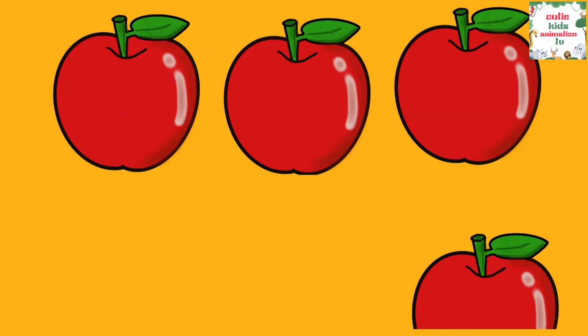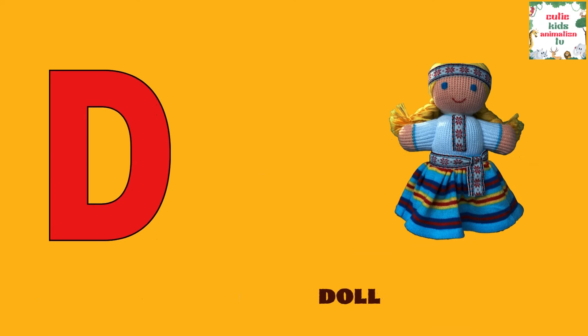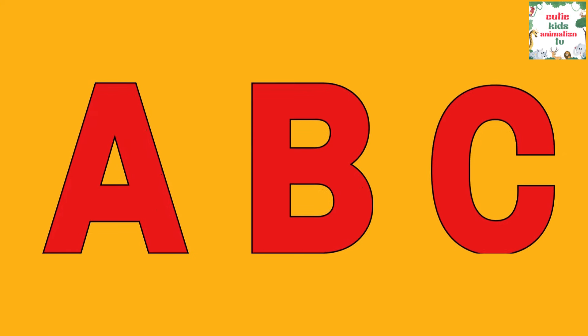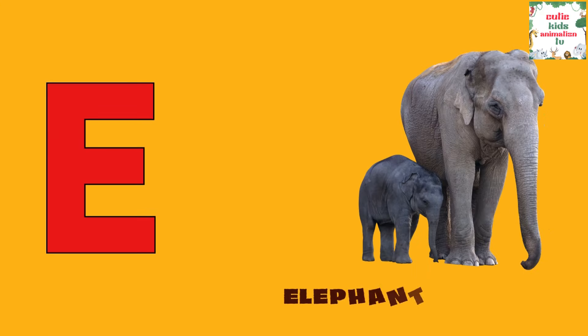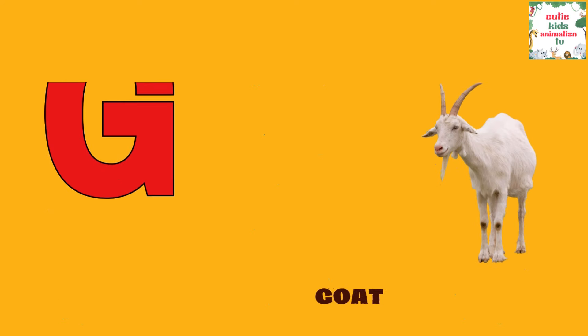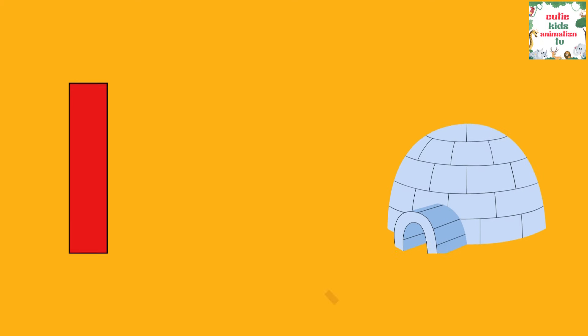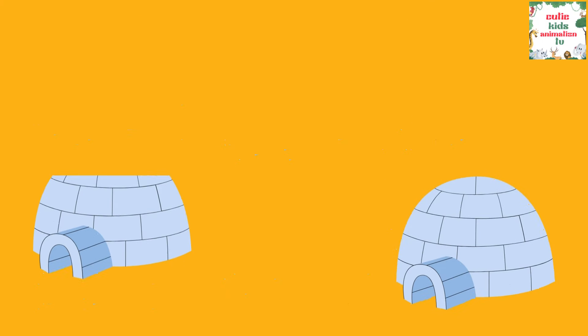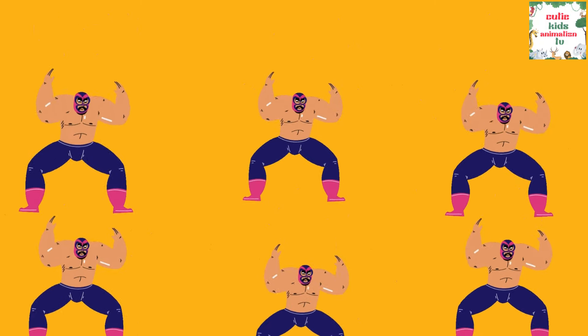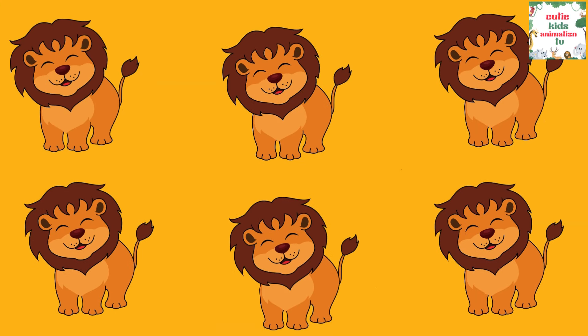A is for Apple, A-A-Apple. B is for Ball, B-B-Ball. C is for Cat, C-C-Cat. D is for Doll, D-D-Doll. E is for Elephant, E-E-Elephant. F is for Frog, F-F-Frog. G is for Goat, G-G-Goat. H is for Hand, H-H-Hand. I is for Igloo, I-I-Igloo. J is for Jump, J-J-Jump. K is for Kangaroo, K-K-Kangaroo. L is for Lion, L-L-Lion.